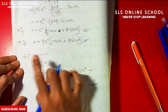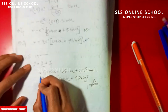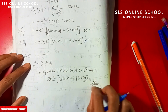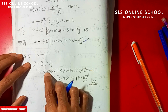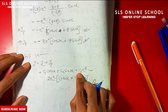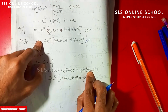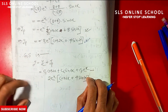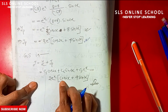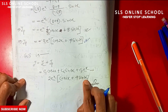Now the general solution is y equal to yc plus yp. So the final answer is y equal to c1 cos 2x plus c2 sin 2x plus c3 e to the power x, minus 2 e to the power x into (cos 2x plus 4 sin 2x).